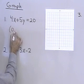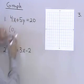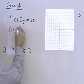Let's let x be equal to 0. When x is equal to 0, the equation becomes 5y equals 20, so y is equal to 4. So this has a y intercept of 4.